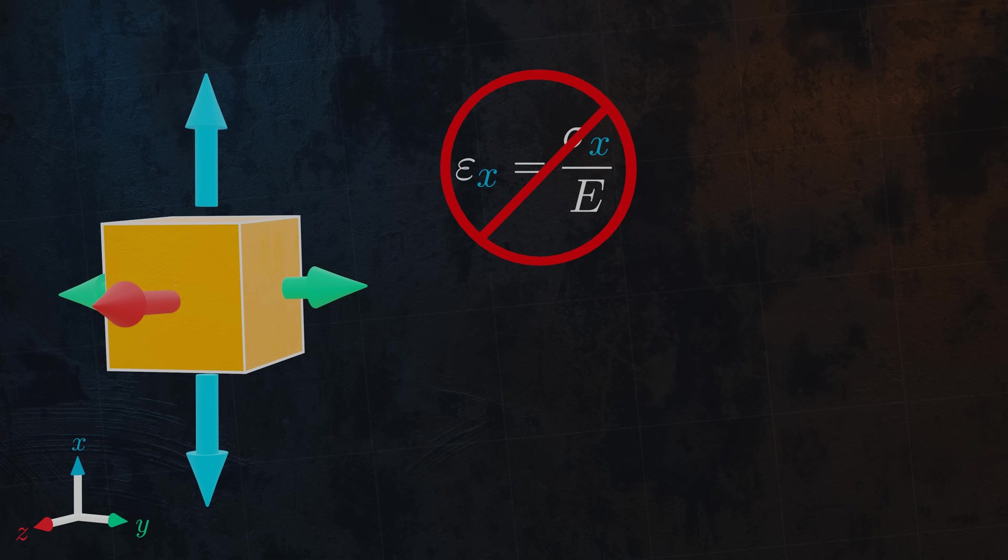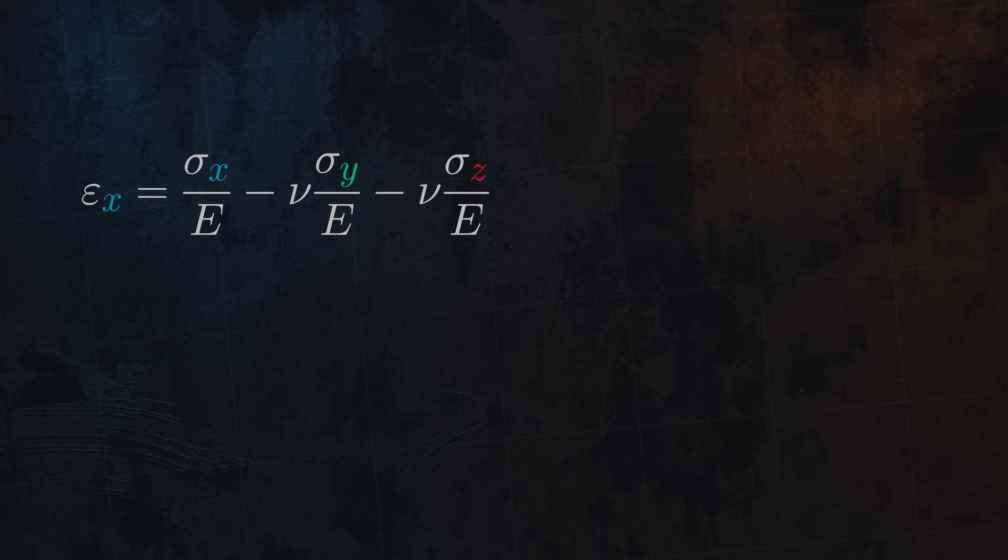We can use Hooke's law in combination with the equation for Poisson's ratio and the principle of superposition to obtain the equation for strain in the x direction. We can rearrange this equation into a more practical form, like so, and then apply the same process to obtain equations for strains in the y and z directions.